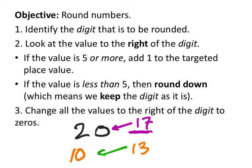Look at the value to the right of the digit. Once you find the place value you're rounding to, just look to the right of that number. This is the rule: if that number to the right of the digit is five or more, you're going to add one to the targeted place value. If it's less than five, it's called rounding down — but really what it means is you're keeping the digit the same.